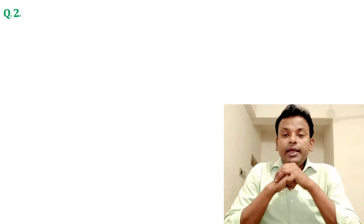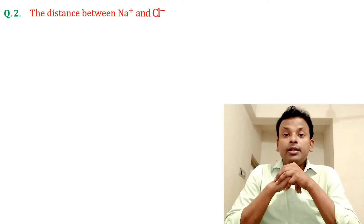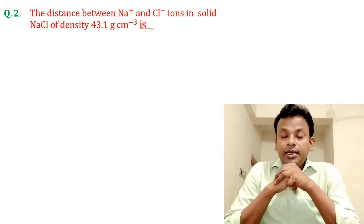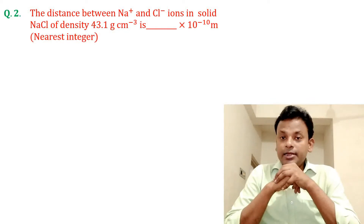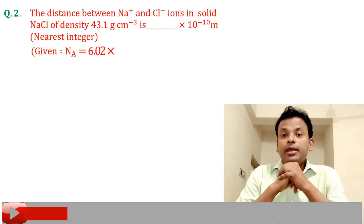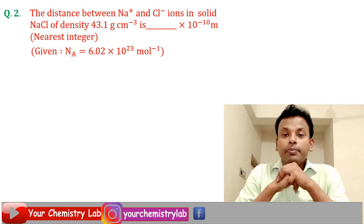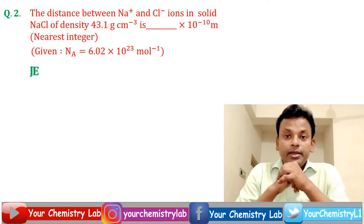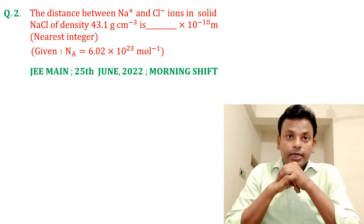Question 2. The distance between Na⁺ and Cl⁻ ions in solid NaCl of density 43.1 g/cc is — × 10⁻¹⁰ meter (nearest integer). Given: Nₐ = 6.02 × 10²³ per mole. This question was set in JEE Main 25th June 2022 morning shift.